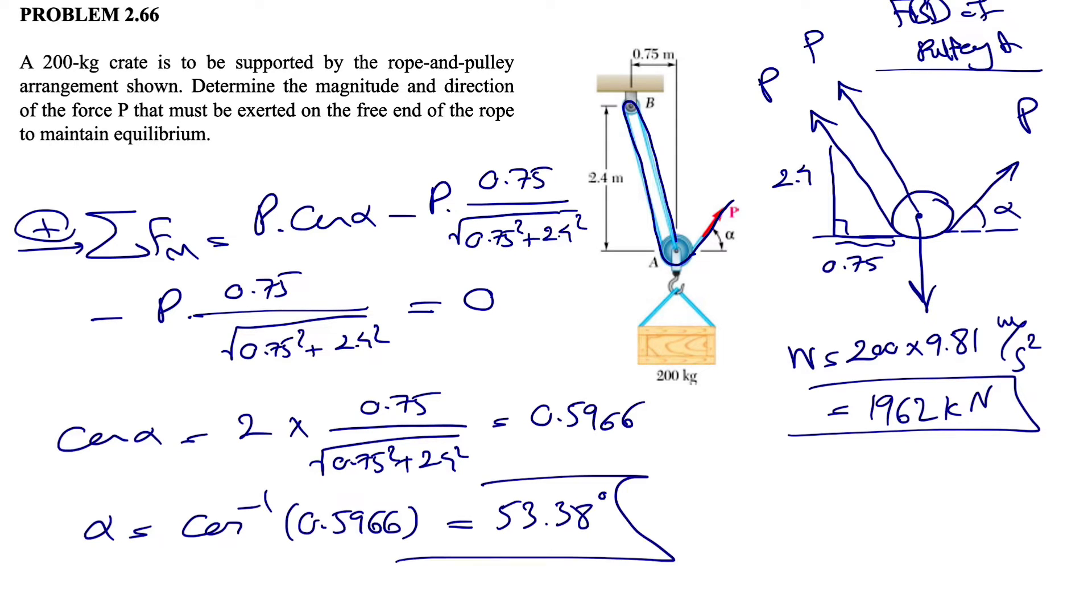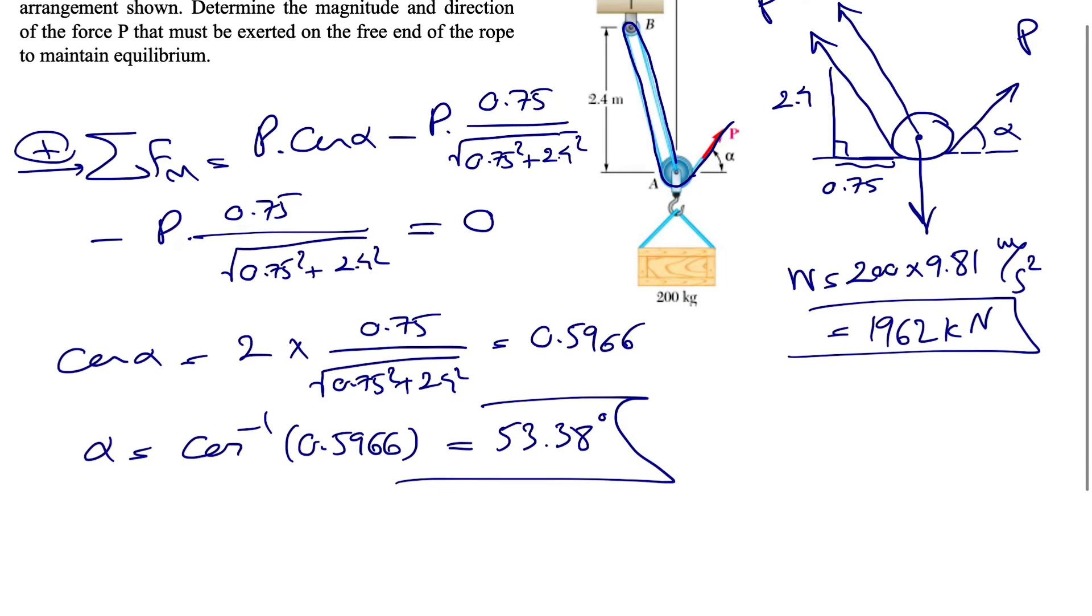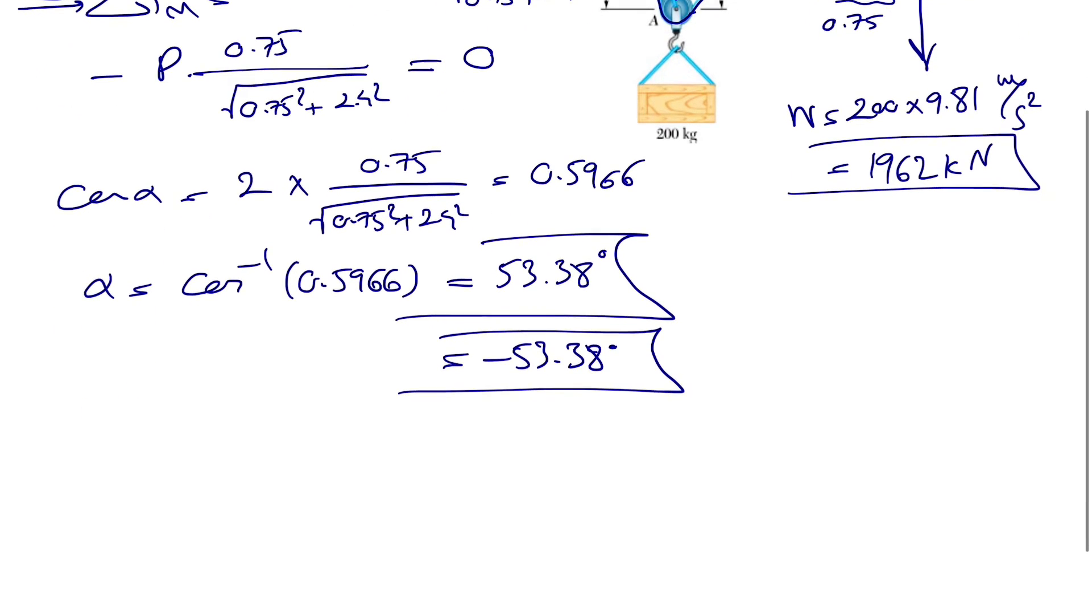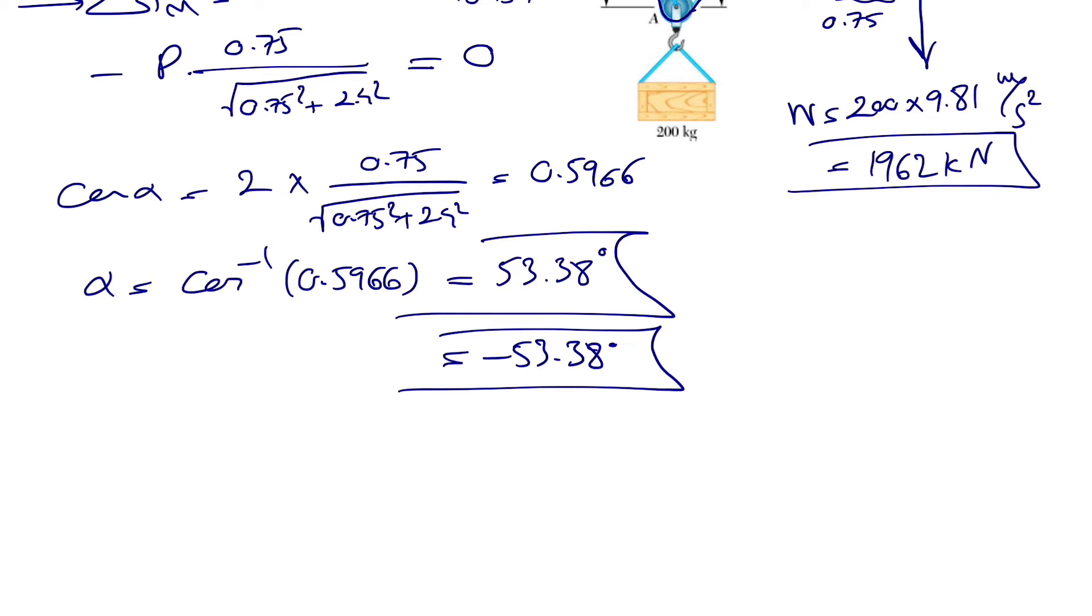If we calculate this we'll get 0.5966, and alpha will be cosine inverse of 0.5966, which would be 53.38 degrees. Since we got this positive amount, the alpha, there is another alpha that we can find, and we will have minus 53.38 degrees also as another angle that can have the same cosine amount, which was 0.5966.